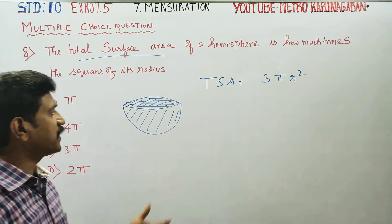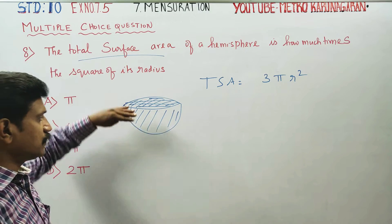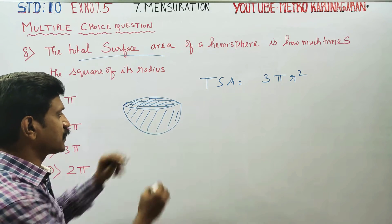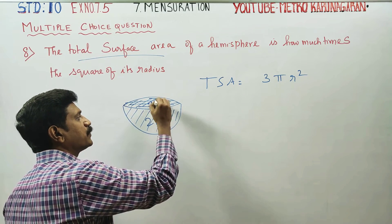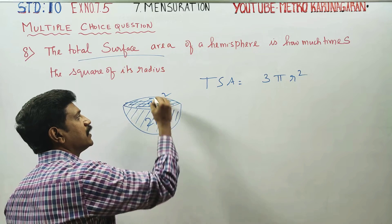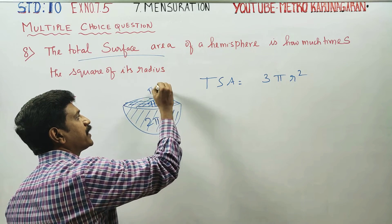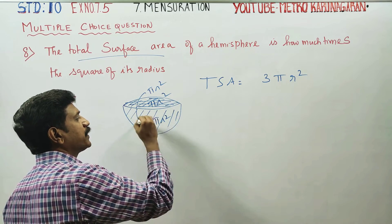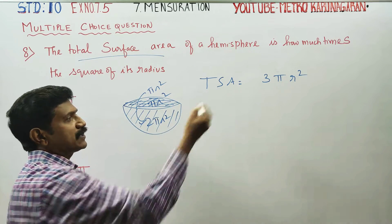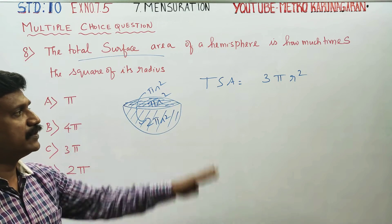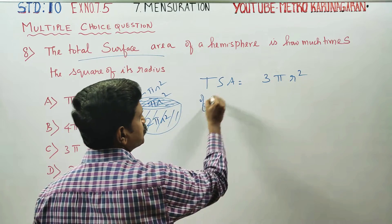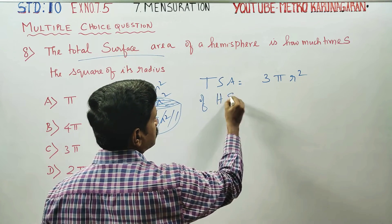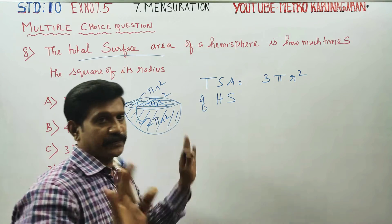This is the 2πr² component. The TSA of hemispheres is made up of these 2πr² parts.